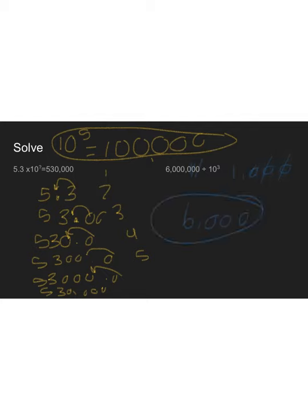I hope this helps you with place value. The biggest takeaways: as you move to the left, your numbers are getting 10 times larger. As you move to the right, your numbers are becoming 10 times smaller.